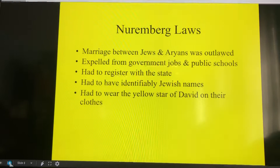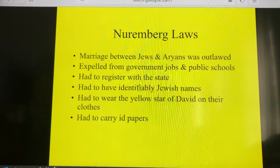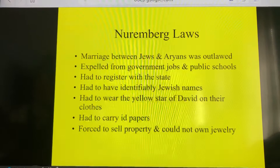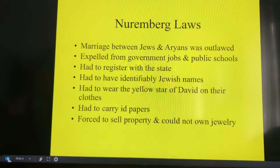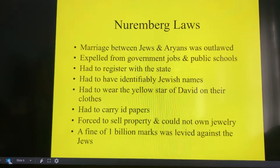Identifiably Jewish names include Sarah, David, Joshua, Rebecca — a lot of Biblical names. Jews had to wear the Star of David on their clothes, which is very noteworthy and well-known from pictures of the time. They had to carry identification papers stating they were Jewish. They were forced to sell property and could not own jewelry — and when we get to pictures from the concentration camps, you'll see the large amount of jewelry that was confiscated. A fine of 1 billion marks was levied against the Jews, which was Hitler's way of trying to pay off reparations.